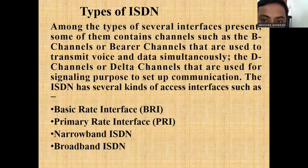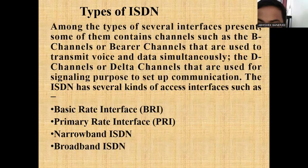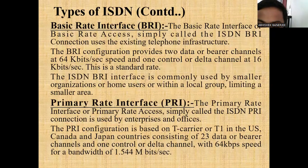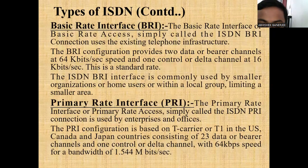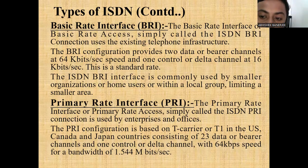Among the several interfaces, some contain channels. The B-channels are used to transmit voice and data simultaneously. The D-channels, or delta channels, are used for signaling purposes to set up the communication. The full form of BRI is Basic Rate Interface, simply called ISDN BRI. This connection uses existing telephone infrastructure. The BRI configuration provides two data or B-channels at 64 kilobits per second speed and one control or D-channel at 16 kilobits per second. The ISDN BRI interface is commonly used by smaller organizations or home users within a local area.